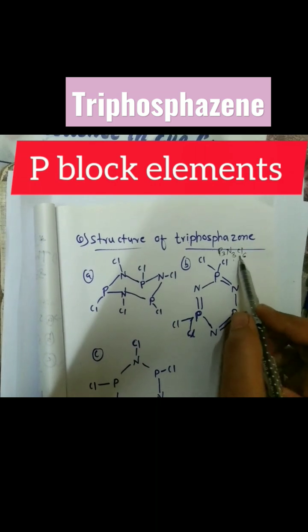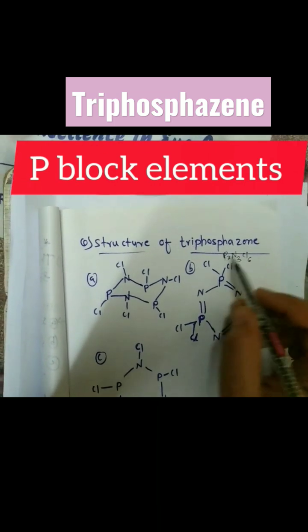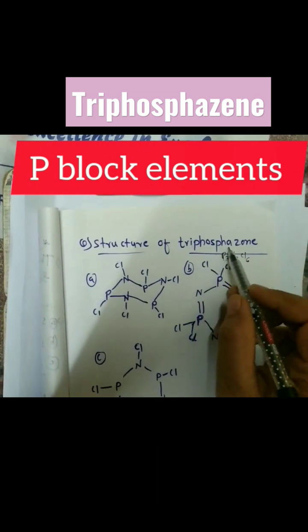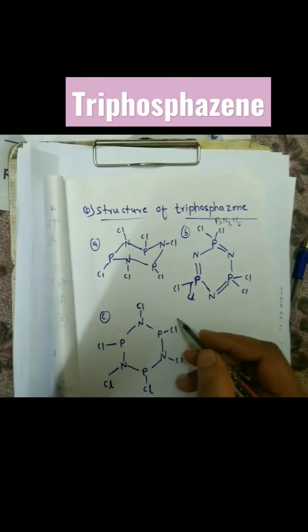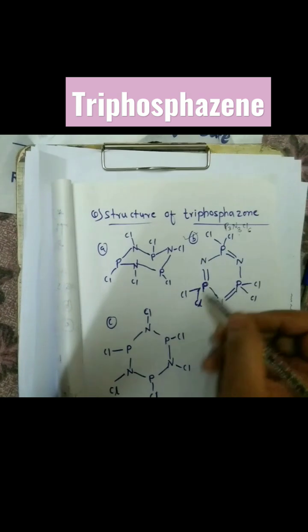This is also called hexachloro triphosphazene or hexachloro phosphophosphazene. These are the given structures, and the correct structure will be this one. Why? Because the phosphorus has five valencies satisfied by this chlorine and nitrogen atom through bonding of electrons.